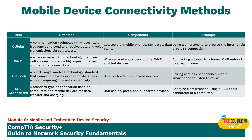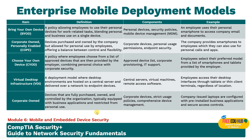Bluetooth is a short-range wireless technology standard that connects devices over short distances without requiring internet connectivity — you need Bluetooth adapters and paired devices, used with headphones, smartphones, and even car entertainment systems. USB connections are the standard type of communications used for computers and mobile devices for data transfer and charging, with ports found in cars as well, where charging smartphones and USB cables are connected to computers.